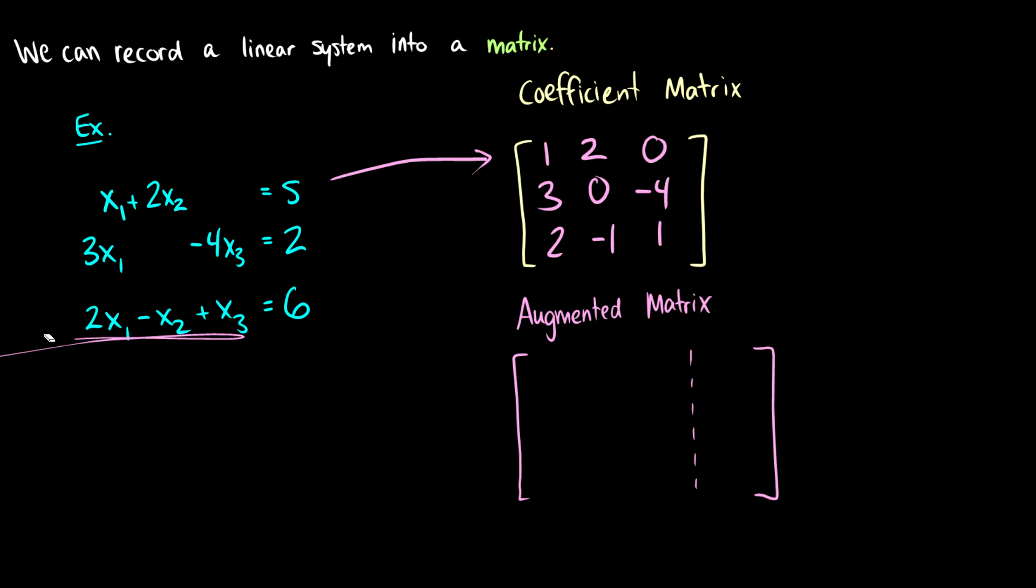An augmented matrix looks at the same details, so we can copy 1, 2, 0, 3, 0, negative 4, 2, negative 1, 1, but it also encodes the solutions in there. So we have 5, 2, and 6. So this augmented matrix encodes the whole system, including the solutions.